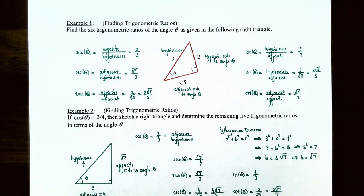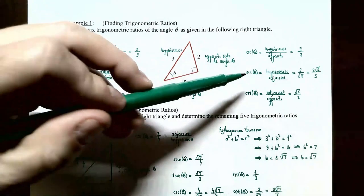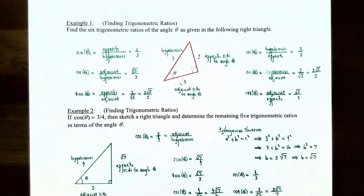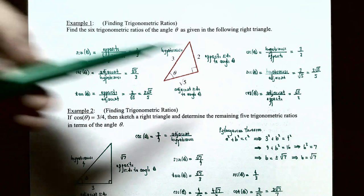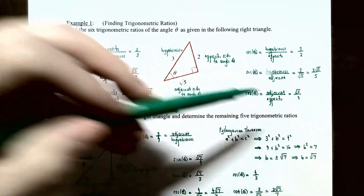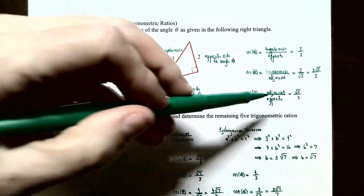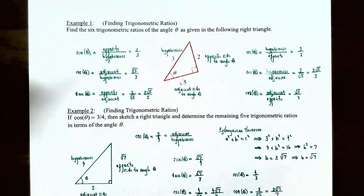For the remaining three ratios: cosecant of theta is the reciprocal of sine, which is hypotenuse over opposite = 3/2. Secant of theta is the reciprocal of cosine: hypotenuse over adjacent = 3/√5, which rationalizes to 3√5/5. Cotangent of theta is the reciprocal of tangent: adjacent over opposite = √5/2.